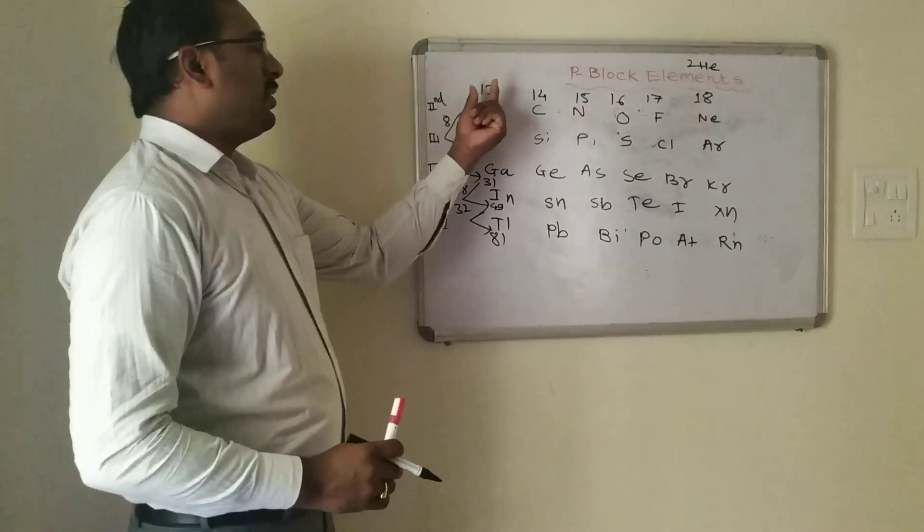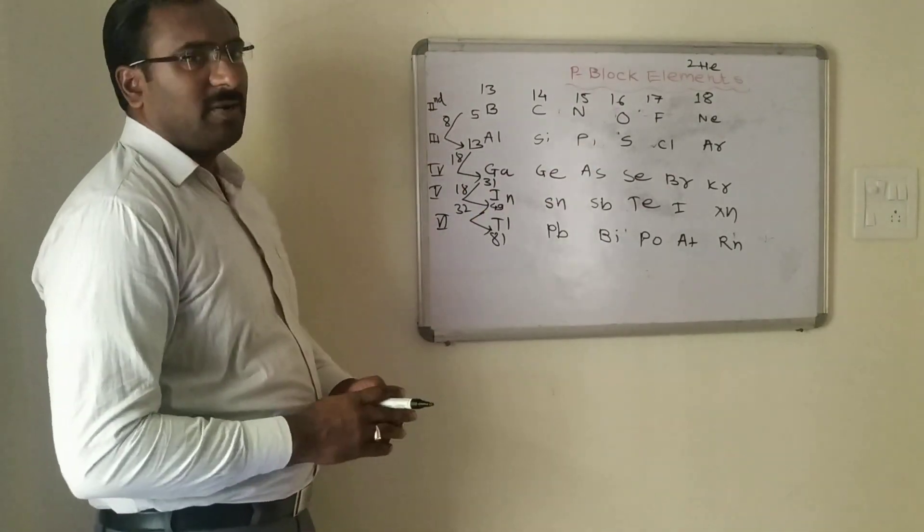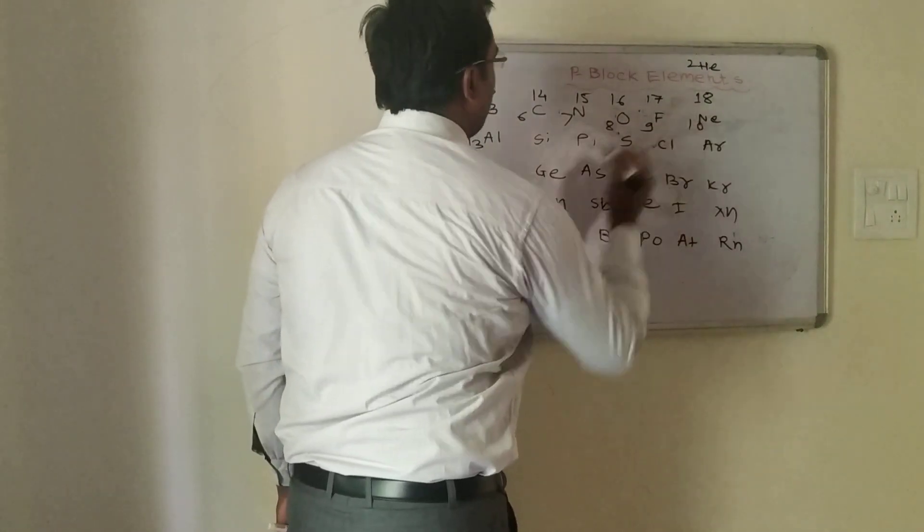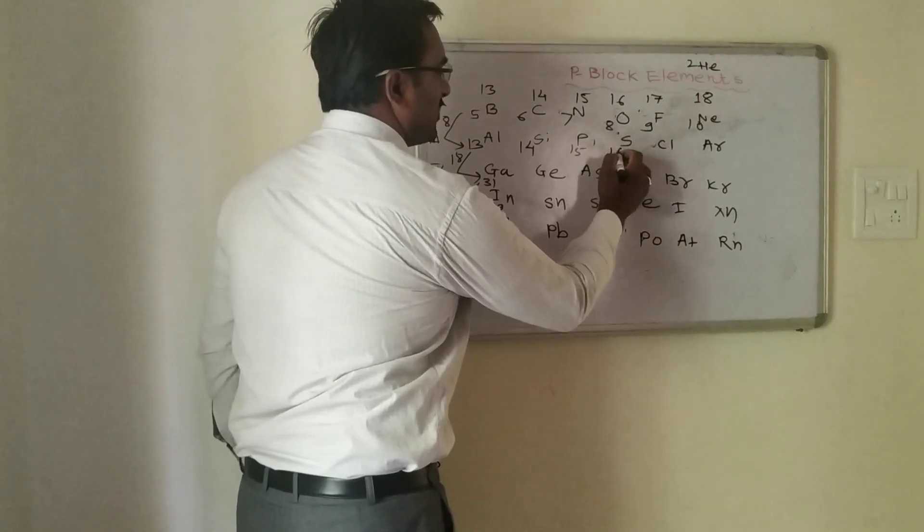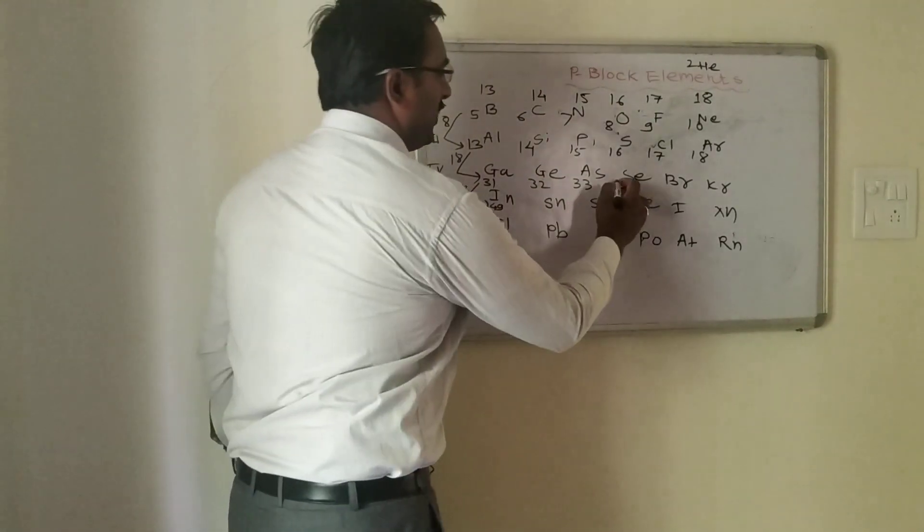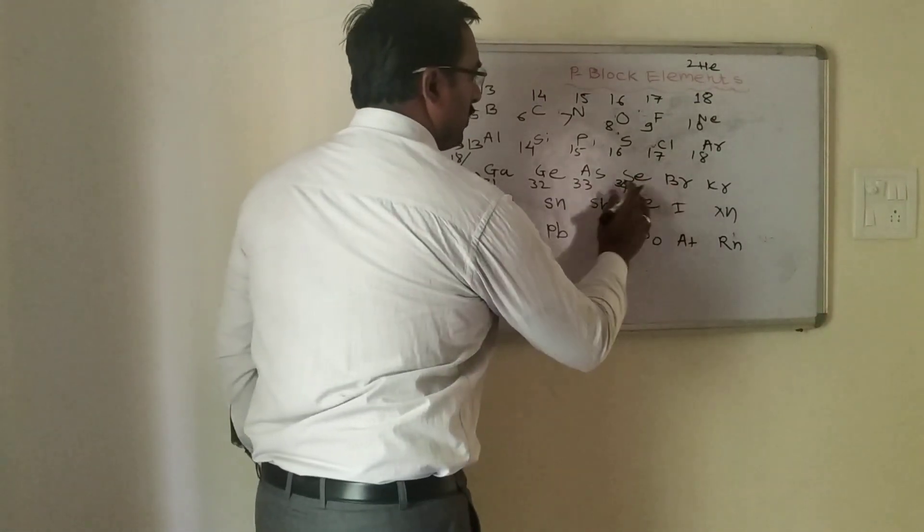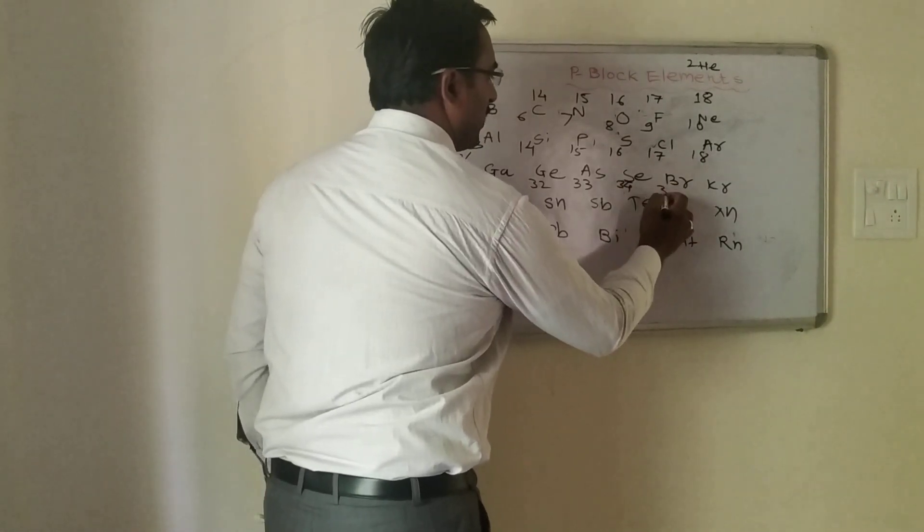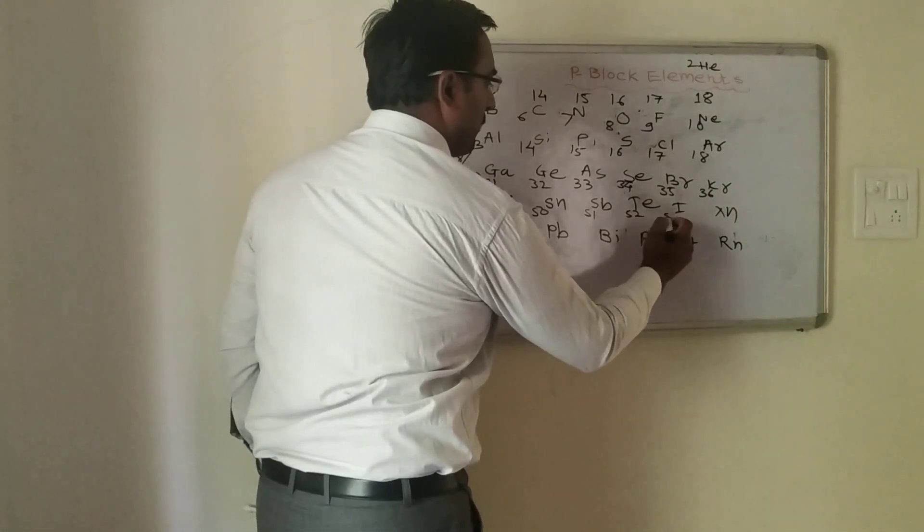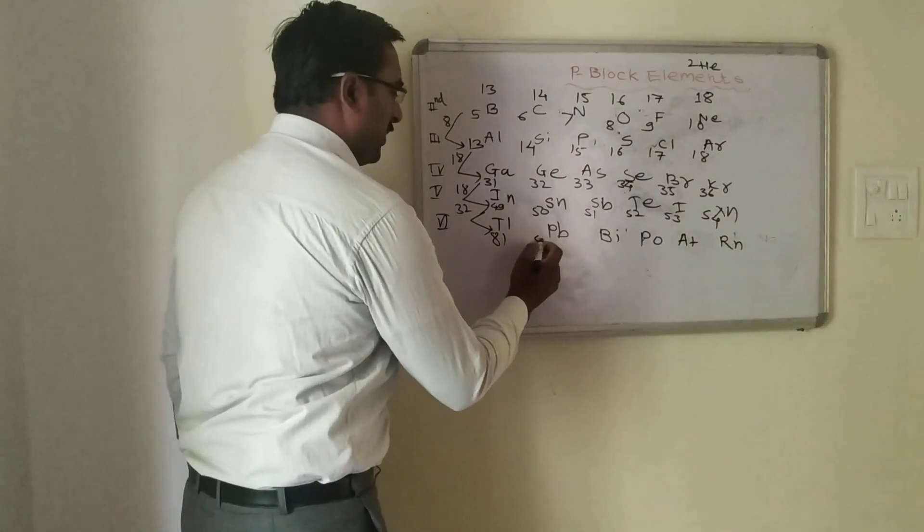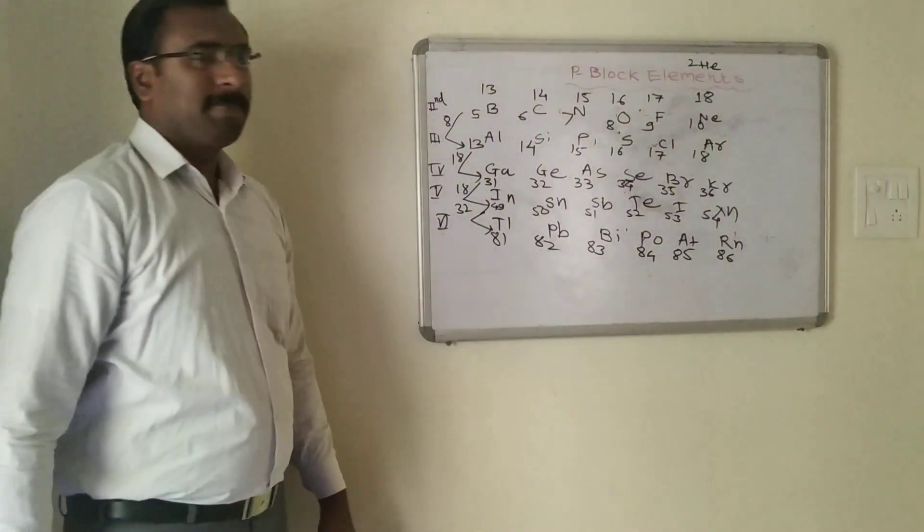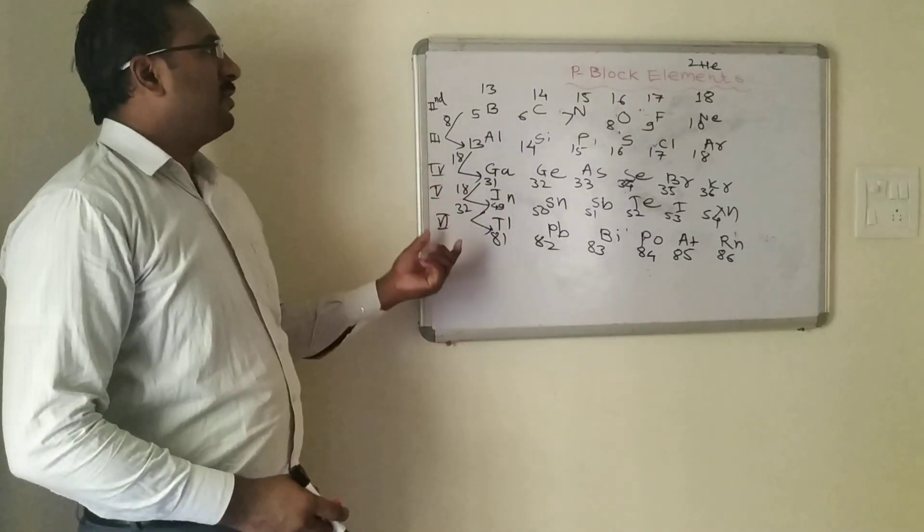Once we remember the atomic numbers of group 13, it is very easy to remember the atomic numbers of other group members. Carbon is 6, nitrogen 7, oxygen 8, fluorine 9, neon 10. Silicon 14, phosphorus 15, sulfur 16, chlorine 17, argon 18. Gallium 31, germanium 32, arsenic 33, selenium 34, bromine 35, krypton 36. Tin 50, antimony 51, tellurium 52, iodine 53, xenon 54. Lead 82, bismuth 83, polonium 84, astatine 85, and radon 86. This is all about the atomic numbers of group 13 to group 18.